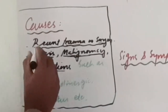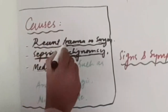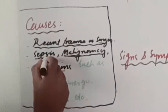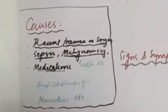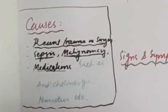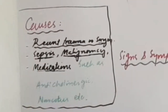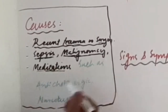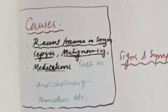The causes of Ogilvie syndrome include recent trauma or surgery, sepsis or infection, malignancy, and medications. Some medications such as anticholinergics and narcotics can cause Ogilvie syndrome.